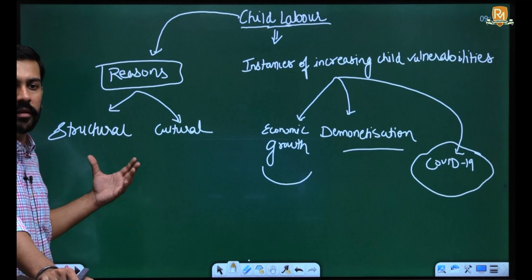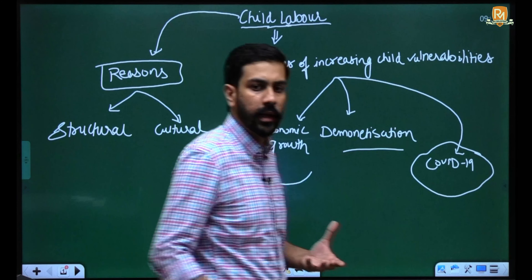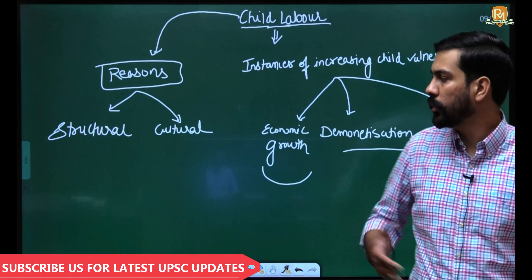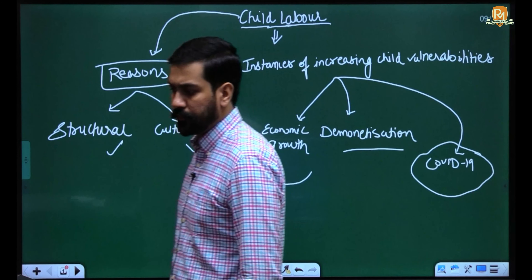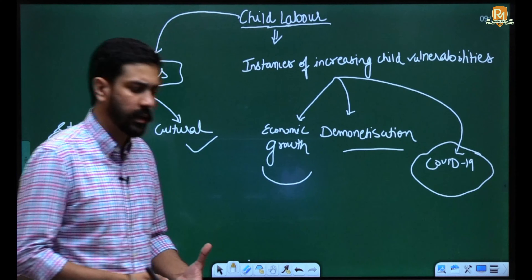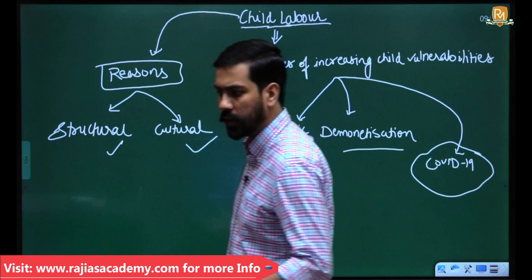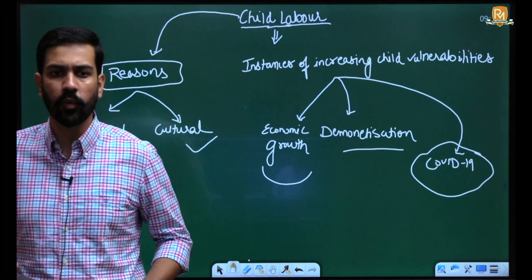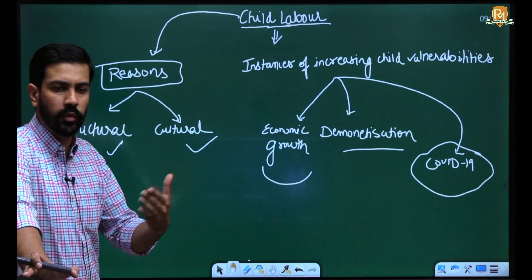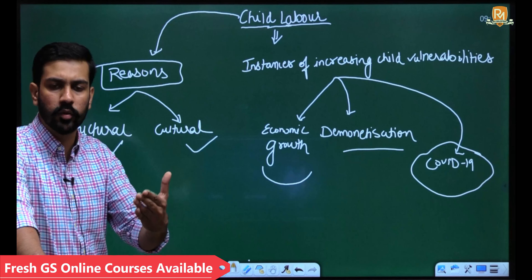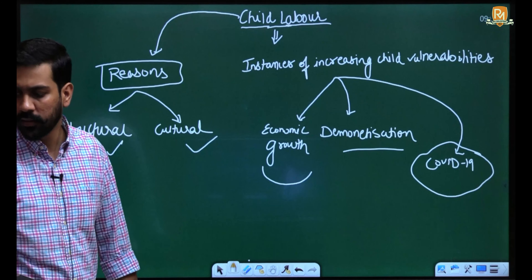We will now look at the reasons for the prevalence of child labor within Indian society. These can be classified into two specific factors: cultural and structural. When writing about causes, always try to go for a classification — such as economic, political, social causes — rather than just listing general points. Here we've classified them as structural and cultural factors.